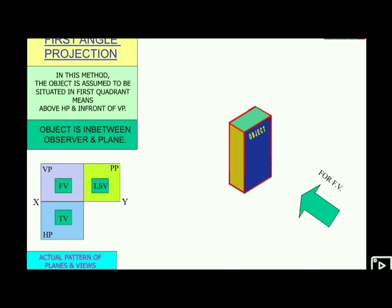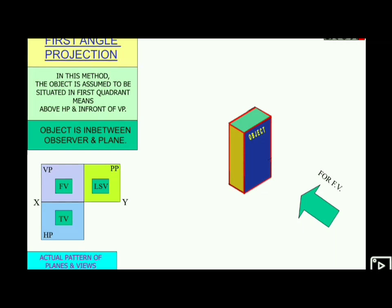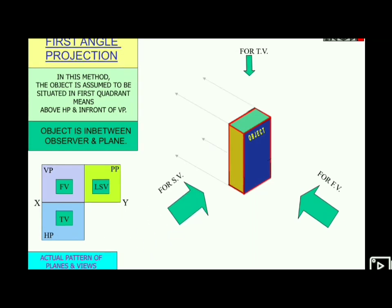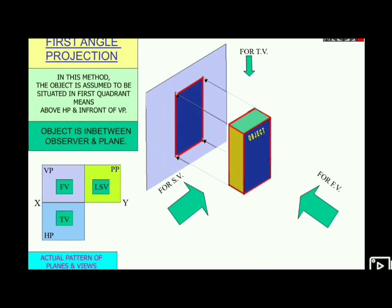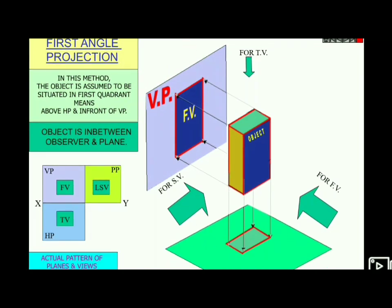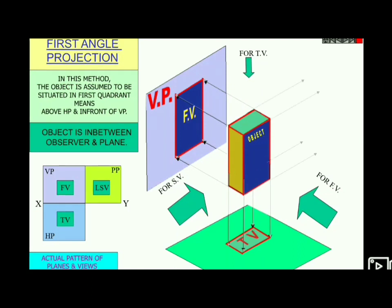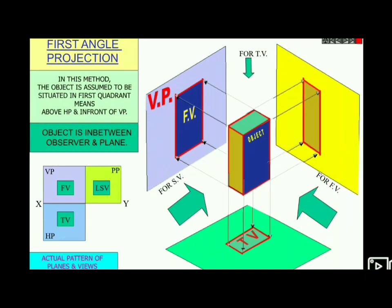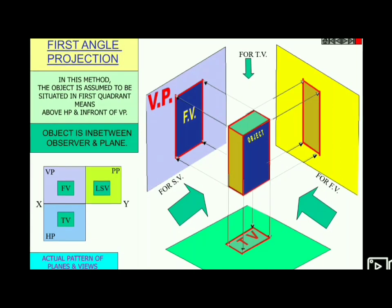If we look from the right side, we see the right side view. We can also see the left side view and the top view. The front view, right side view, left side view, and top view together describe the object completely.